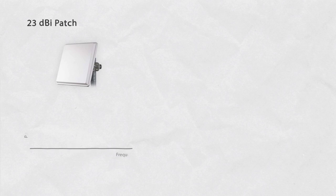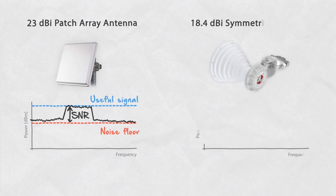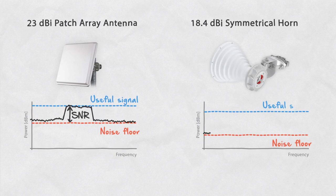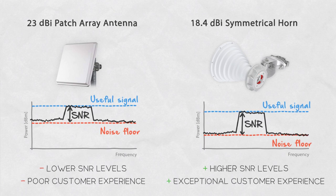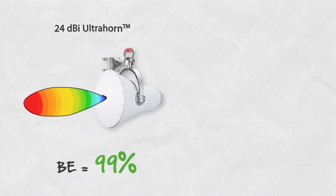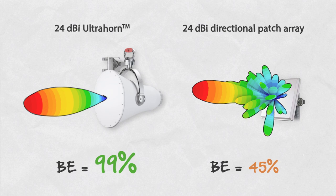Lower gain of horns, which WISPs might often worry about, is outperformed by the increased SNR the radio is working with and the coverage stability important for exceptional customer experience. With the ultra horn, the staggering difference in beam efficiency compared to directional patch arrays and dishes indicates where the strength of the ultra horn lies — it beams the energy at the output port of the radio into a single directional beam.